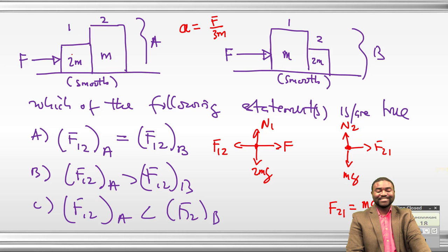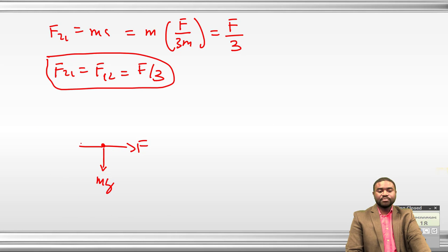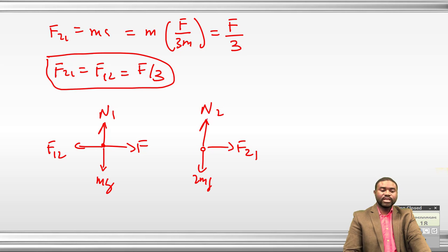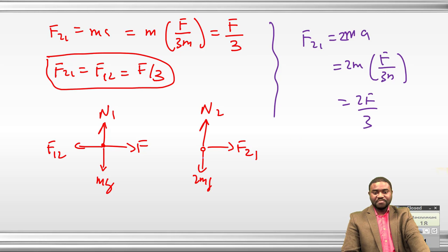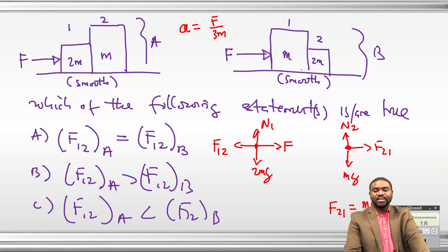For case B, free body diagram: force F on block M, contact force F12, and for block 2M the contact force F21 forward. F21 = 2M·A = 2M·(F/3M) = 2F/3. So clearly the contact force in case B is greater than in case A — the answer is C.